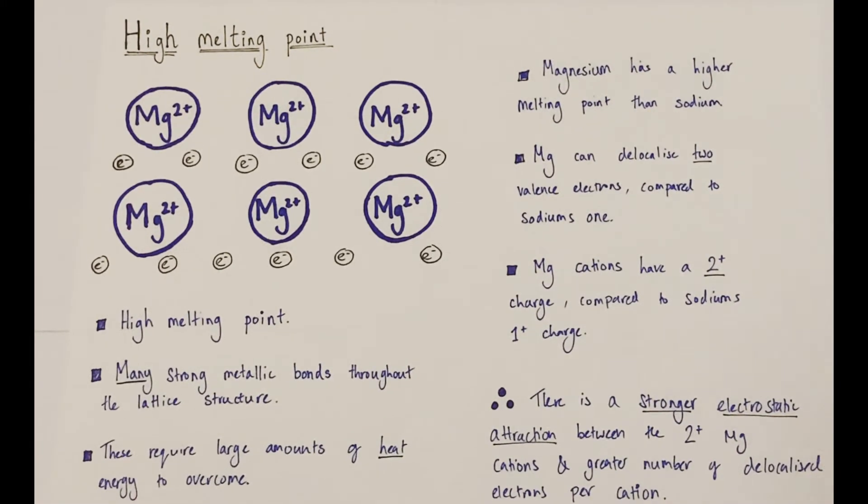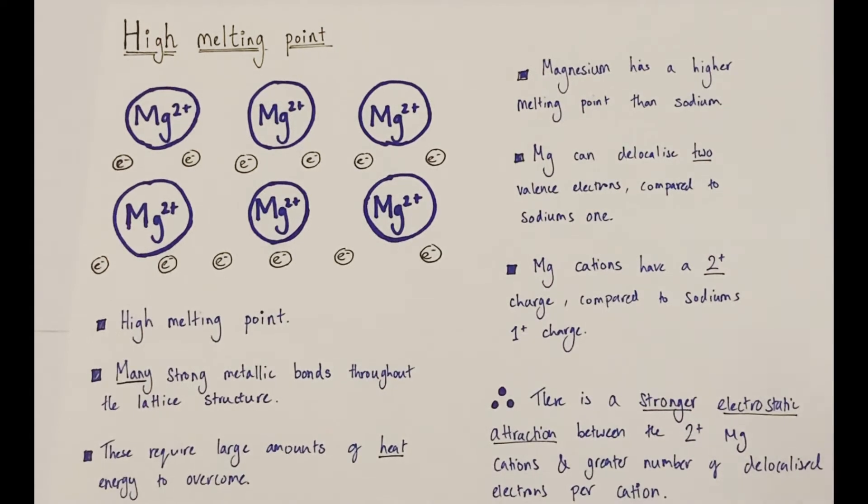It would be because of all those strong metallic bonds. There are many strong metallic bonds throughout that giant lattice. Those many metallic bonds will require large amounts of heat energy to be broken and overcome.